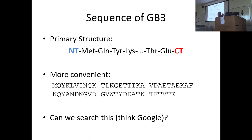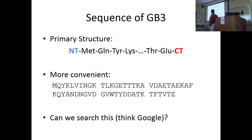Once we represent our protein sequence this way, it becomes just a string — a list of characters. So this is the definition of a computer string, starting with M, Q, Y, K, L, et cetera. Lots and lots of programs are really good at taking strings and comparing them to other strings and making inferences about strings. When you type a search phrase into Google, you're typing a string of characters, and Google interprets that and comes up with an answer.